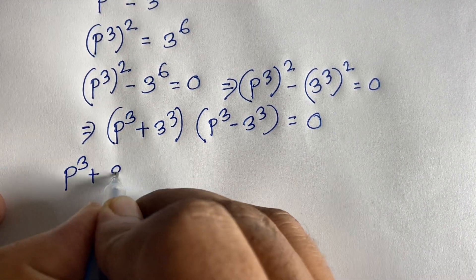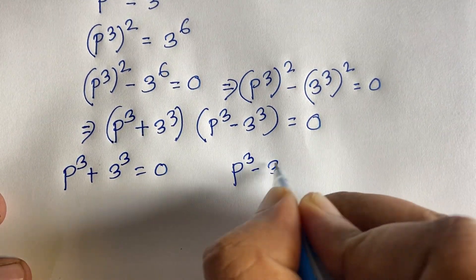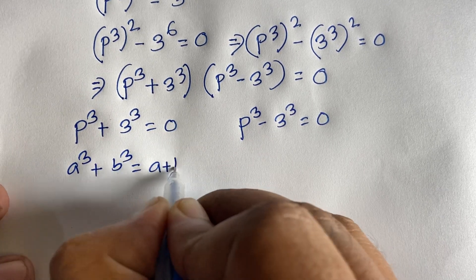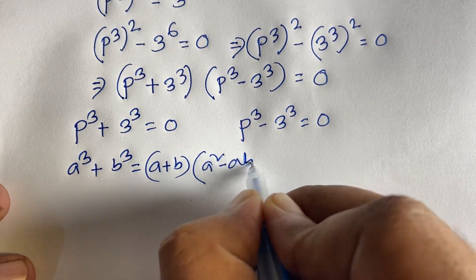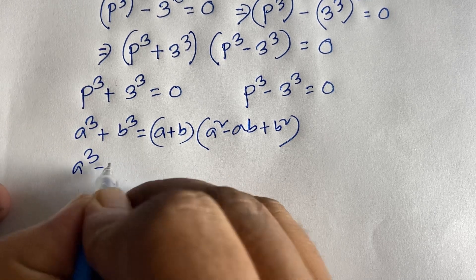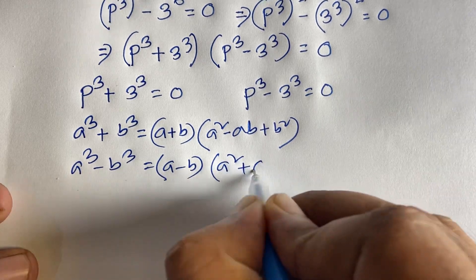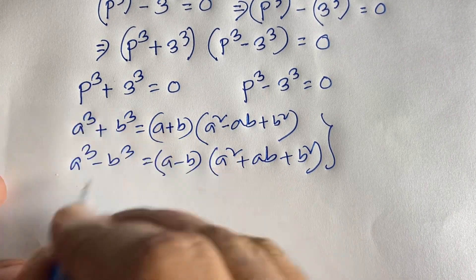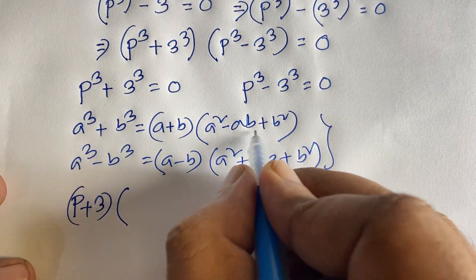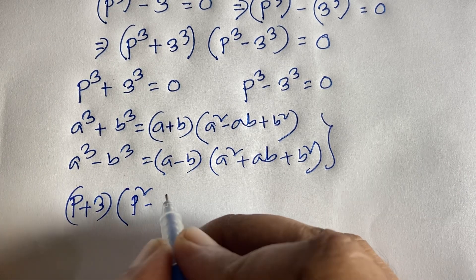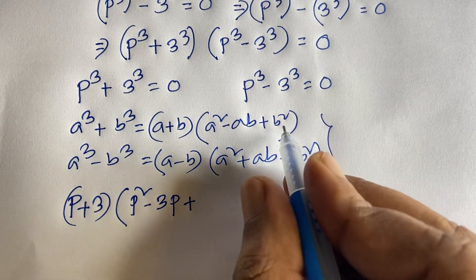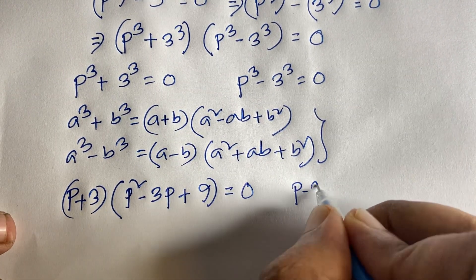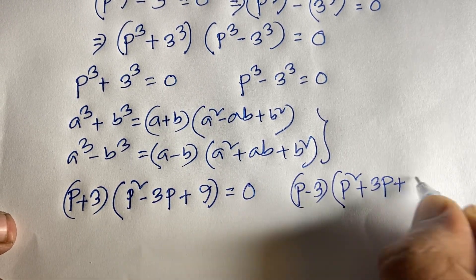Setting each factor to zero: p³ + 3³ = 0 and p³ − 3³ = 0. Using the sum of cubes — a³ + b³ = (a + b)(a² − ab + b²) — the first gives (p + 3)(p² − 3p + 9) = 0. Using difference of cubes — a³ − b³ = (a − b)(a² + ab + b²) — the second gives (p − 3)(p² + 3p + 9) = 0.